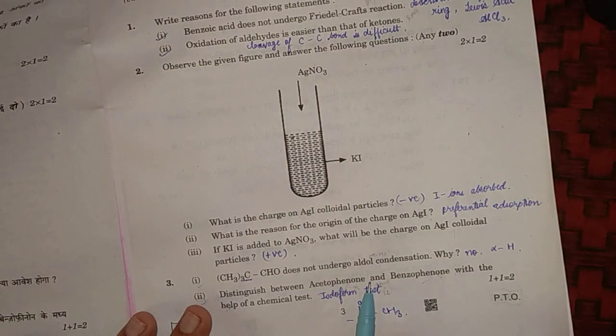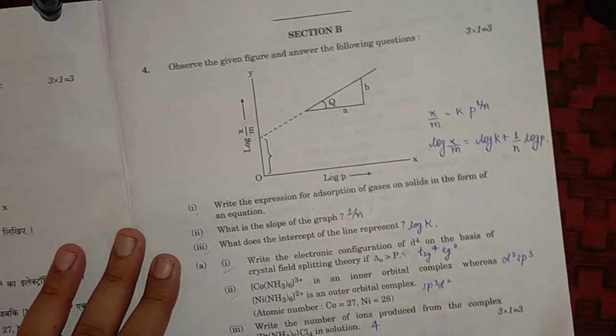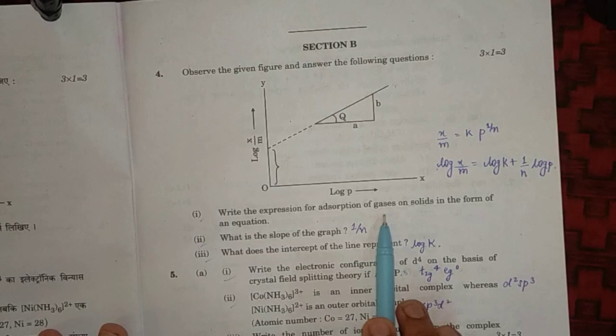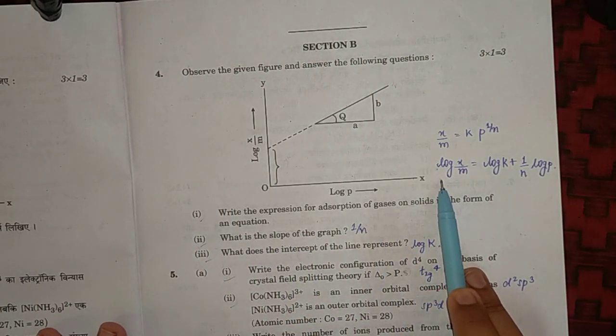Moving on to Section B, fourth question: write the expression for the adsorption of gases on solid in the form of equation. So equation will be log x/m equals to log k plus 1/n log p.